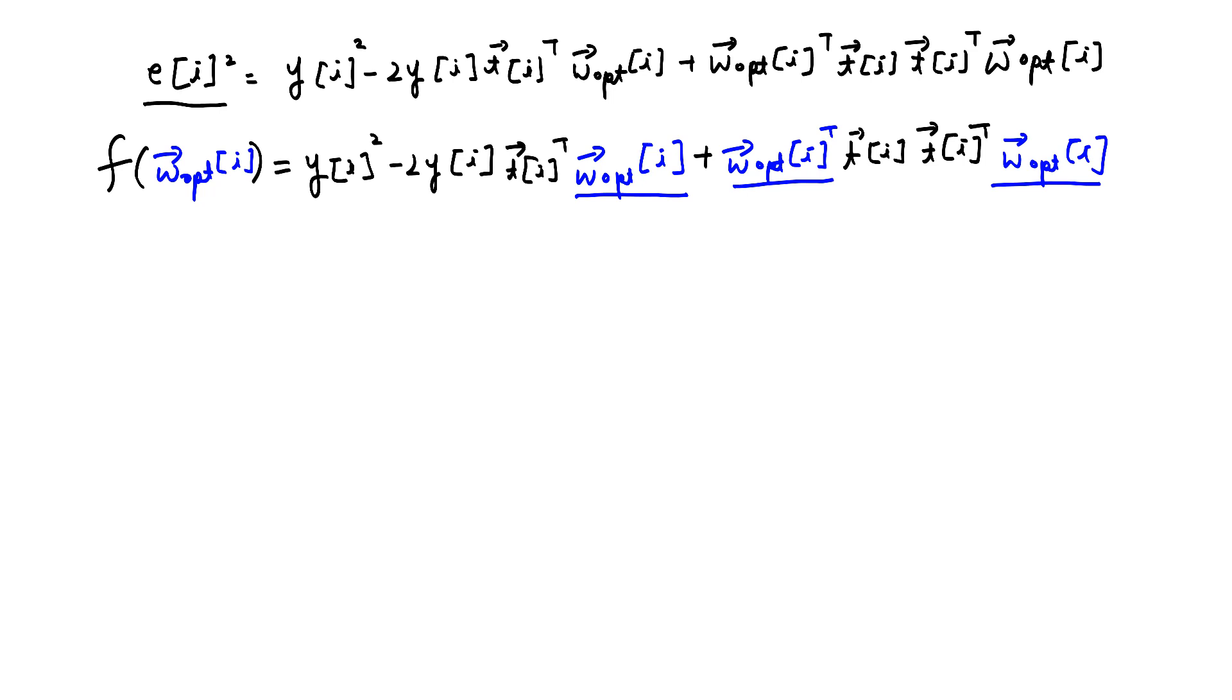So clearly we see that this e of i squared is a function of w opt of i. From your math education, you may recall this function f(x) equals ax squared plus bx plus c, which is a quadratic function. And this function generates a parabola.